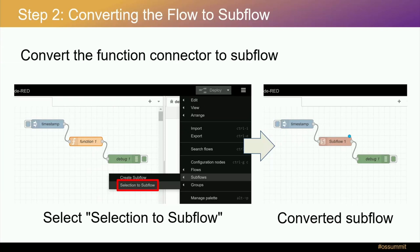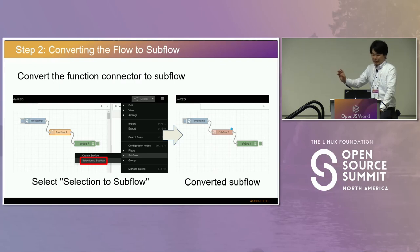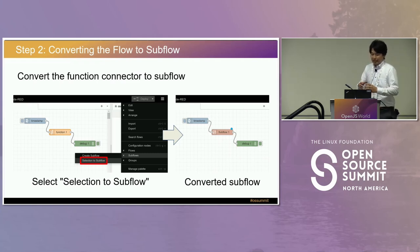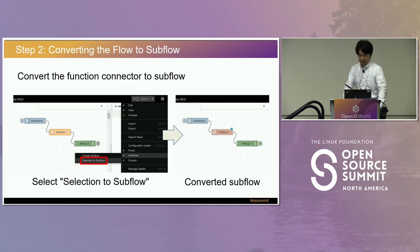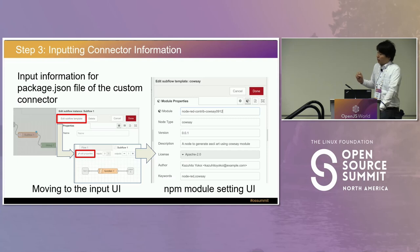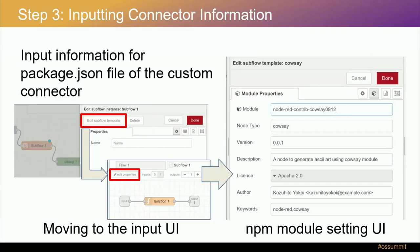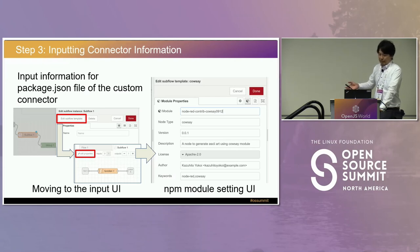The flow editor has a UI to create a subflow from normal connectors. After selecting the function connector, I selected the 'Selection to Subflow' item from the menu, and the selected function connector was converted into a single subflow. The flow editor also has a UI for entering custom connector information. After navigating to that UI, I input the NPM module name, version number, author, and other information. This information will be used in the package.json of the custom connector.